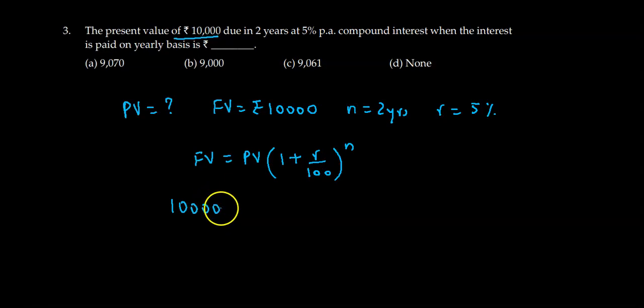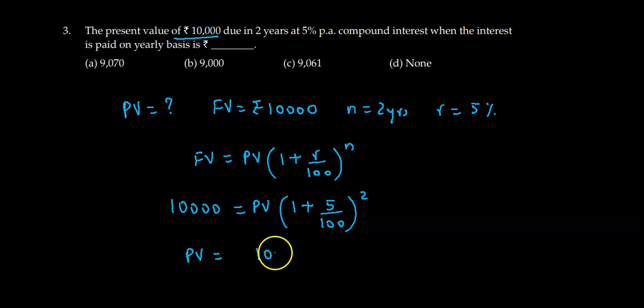Future value is 10,000. Present value we don't have to look at. 1 plus rate is 5 upon 100 raised to 2. Present value we get is 10,000 divided by 1.05 square.